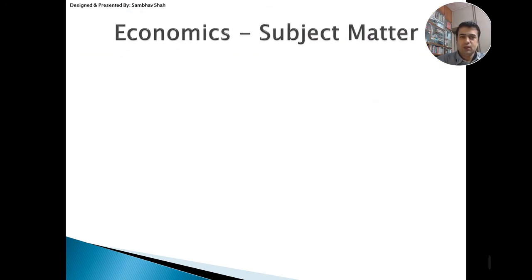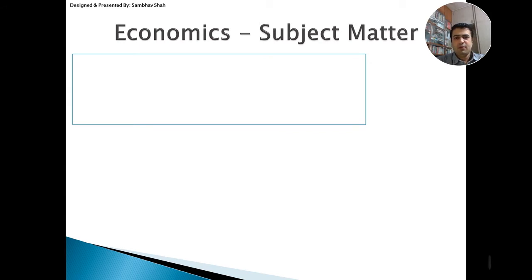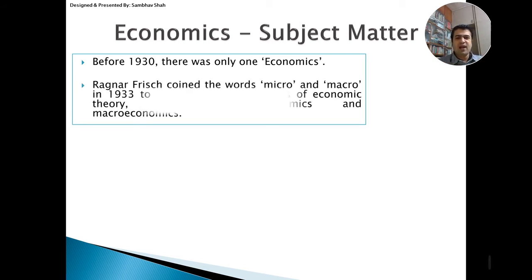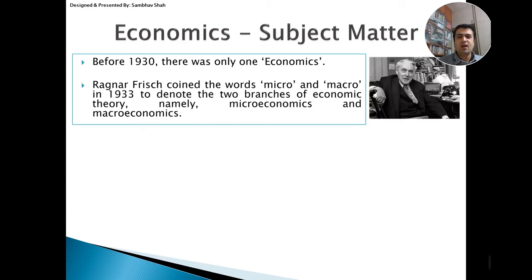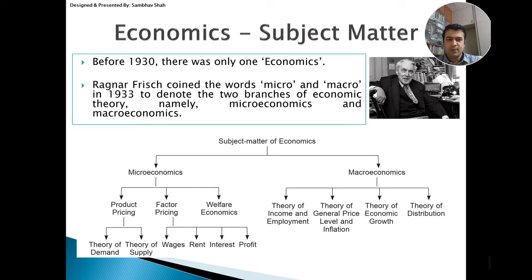Let's understand the subject matter of economics. Before 1930, there was only one subject — economics. But after 1930, one person named Ragnar Frisch coined two terms: microeconomics and macroeconomics. In 1933 he denoted these two branches. Before 1933, from 1776 when Adam Smith started economics, there was only one economics. After Ragnar Frisch, he developed the two branches of micro and macro — that became the entire subject matter.